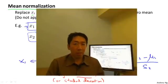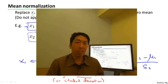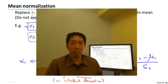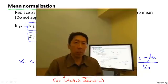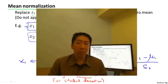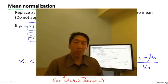So, now you know about feature scaling. And if you apply this simple trick, it can make gradient descent run much faster and converge in a lot fewer iterations. That was feature scaling. In the next video, I'll tell you about another trick to make gradient descent work well in practice.